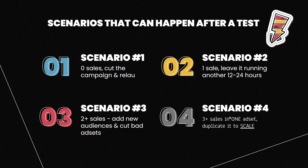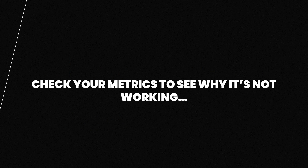Scenario four: you get three or more sales in one ad set. What you do is duplicate and scale — this is where you really make money. This is what gurus charge $2,000 or more for. If you get three-plus sales, that ad set is probably qualified and has a high chance of making good money for your client. If it's not performing well, check your metrics — check if the click rate is low. If your click rate is 2%, relaunch with a new video, new marketing angle, or new audience.